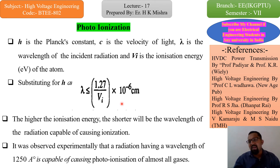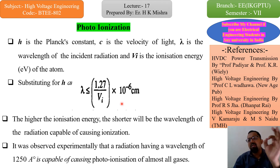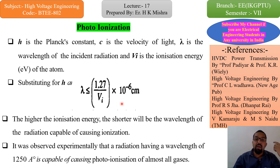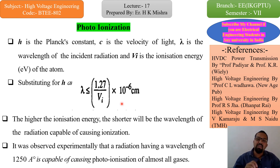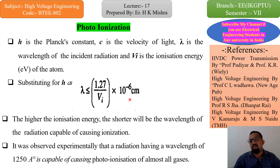For exam preparation: if you are asked about photo ionization, it is typically worth 4 marks maximum, and these two slides are sufficient to write the answer. You may be asked 'What is photo ionization?' or 'What is the condition for photo ionization?' The key equation is: lambda less than or equal to 1.27 divided by Vi, times 10 to the minus 6 centimeters — then photo ionization will occur.